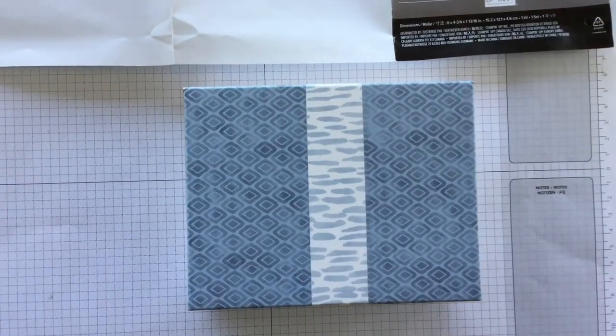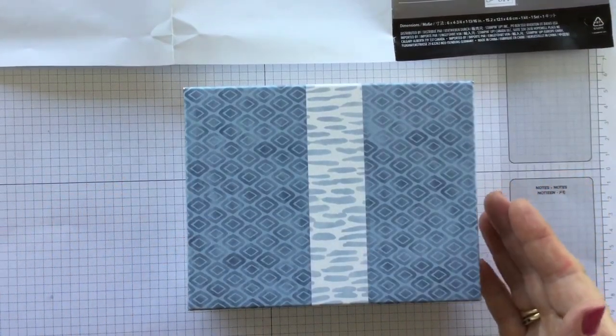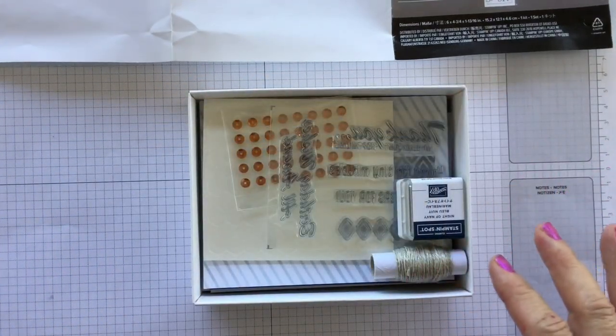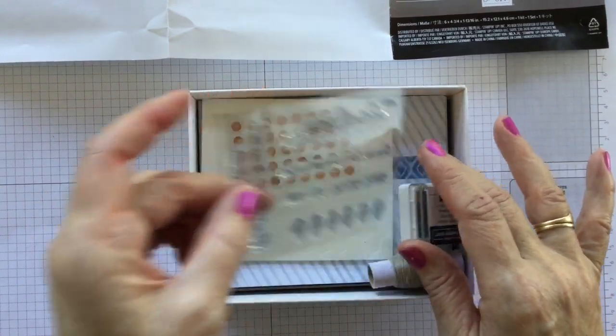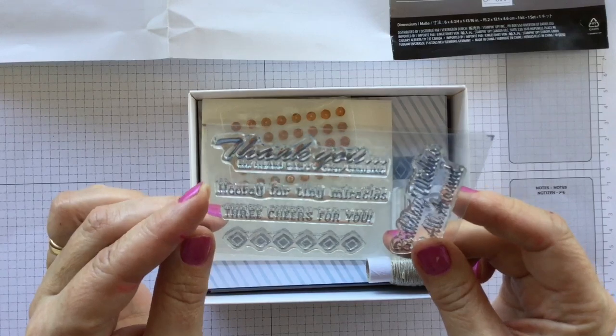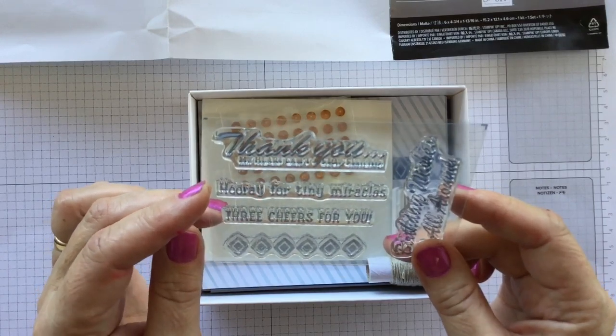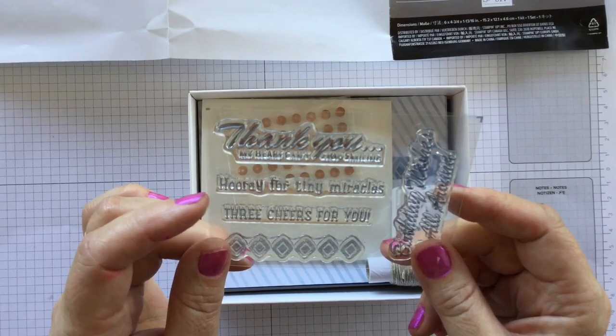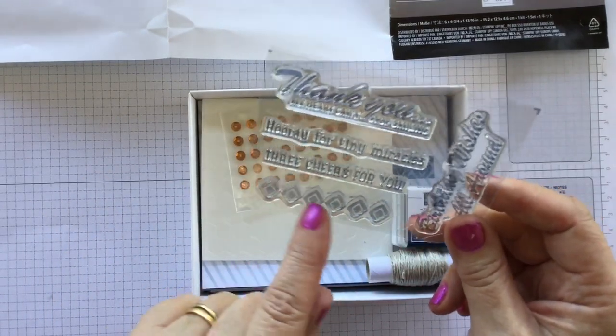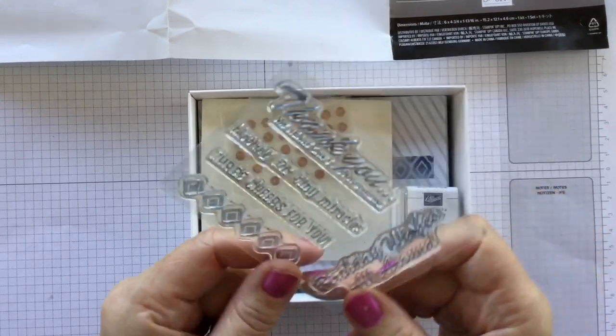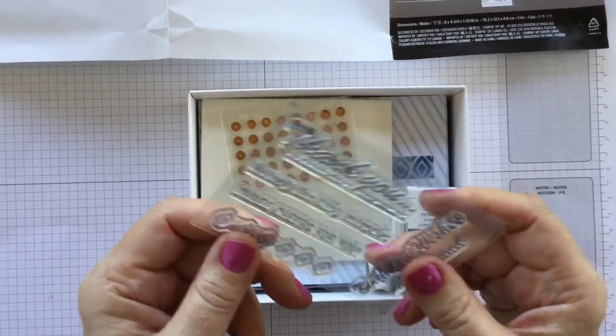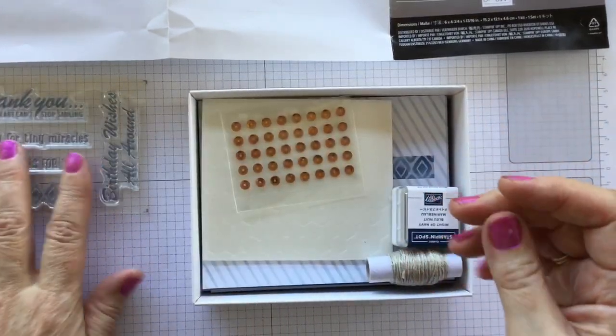So I've not even looked at this. Slack I know, but I did purchase this with the intention of showing it to you. So here we go. So you undo your little kit and you're going to get a stamp set. Now this stamp set says, thank you, my heart can't stop smiling. That's nice. Hooray for tiny miracles. Three cheers for you. And then we also have this little abstract pattern down here as well. And then birthday wishes all around. So a very versatile stamp set that can be used for a number of occasions there.